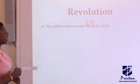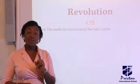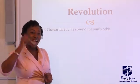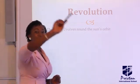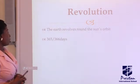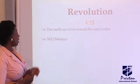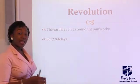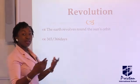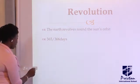Now let's talk about revolution of the earth. The earth revolves around the sun's orbit. Remember, the earth rotates about its own axis but revolves around the sun's orbit. The earth takes 365 days, or 365 and one quarter days, to complete this revolution — which gives us 366 days in a leap year.